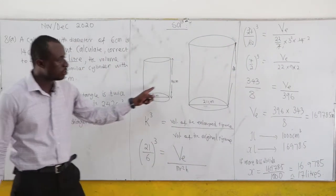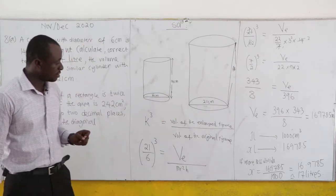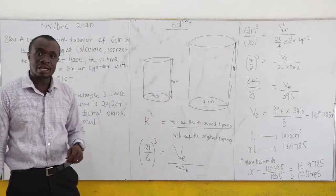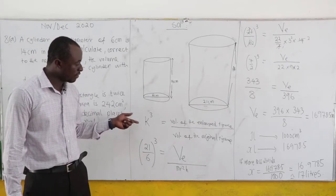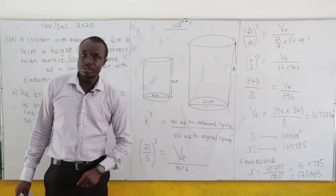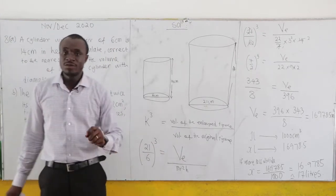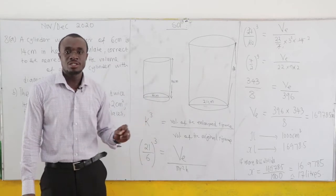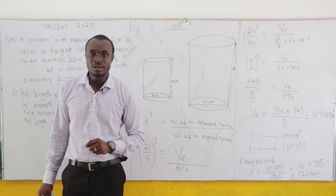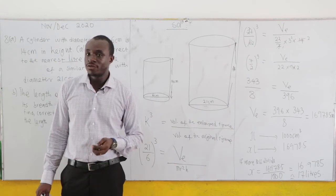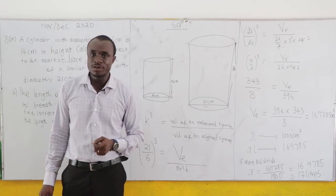Because these two diagrams are similar, the cube of the scale factor equals the volume of the large figure over the volume of the original figure. If you need wonderful tutorials on similar shapes, kindly visit my YouTube channel for a lesson on it. Don't forget to subscribe — we have a whole lot of videos to help you pass your exams with ease.